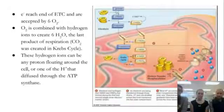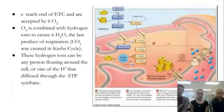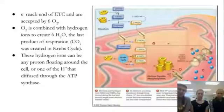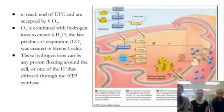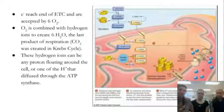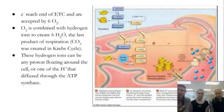The oxygen molecules are each combined with two hydrogen ions to create six molecules of H₂O, or water, which is the final product of cellular respiration. Our other product, carbon dioxide, is created during the Krebs cycle. The hydrogen ions used can be any proton floating around the cell, or they can be some of the hydrogen ions that diffused through the ATP synthase to create ATP.